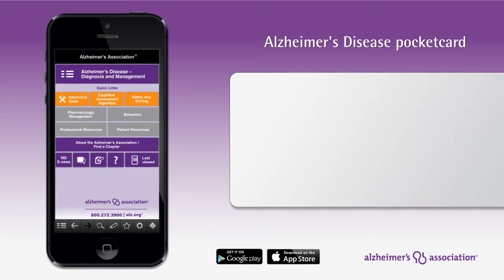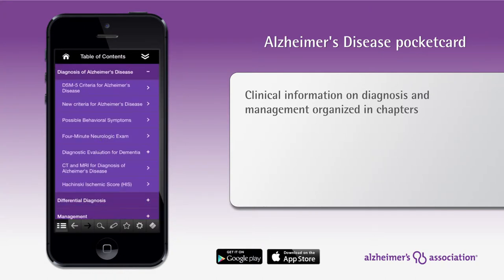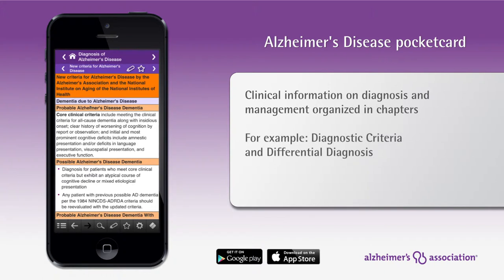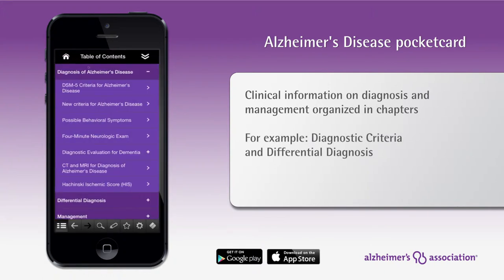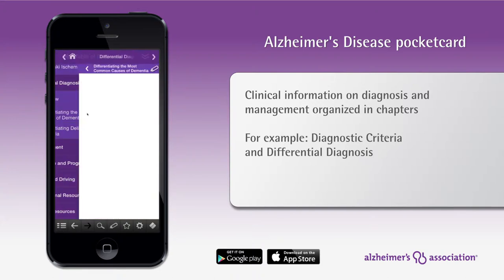Clinical information on diagnosis and management of Alzheimer's disease is conveniently organized in chapters. For example, see the new criteria for diagnosing Alzheimer's at a glance, or review symptoms of the most common causes of dementia.